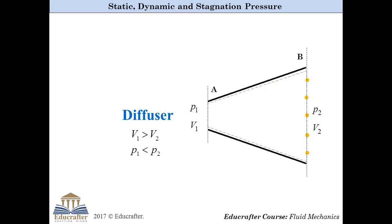So, total stagnation pressure at section A is always higher than the total stagnation pressure at section B, in case of nozzle as well as in case of diffuser. So, now the question is, what is the difference between static pressure and stagnation pressure?